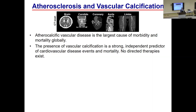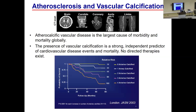She had occlusion of one of her subclavians and a radial artery, so we had to go with brachial artery access to gain access to her coronaries and provide the therapy she needed. This is not an uncommon problem. Atherocalcific vascular disease is the largest cause of morbidity and mortality globally, and the presence of vascular calcification serves as a strong independent predictor for cardiovascular disease events. Yet no directed therapies for calcification exist. Studies show that for every additional arterial bed affected by calcification — coronary, carotid, tibial, or aortic — mortality significantly increases.